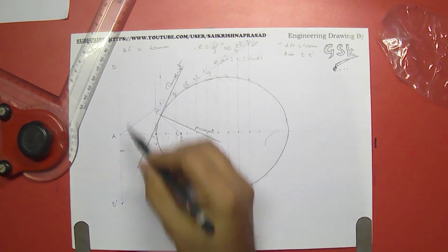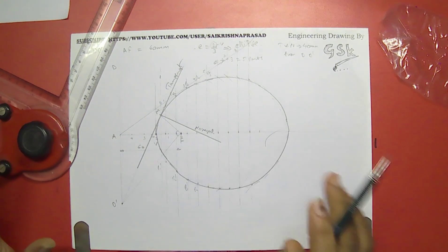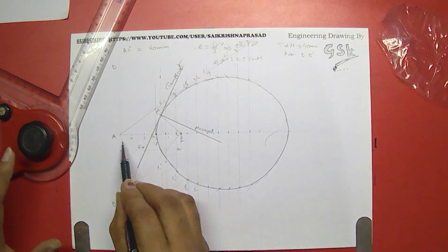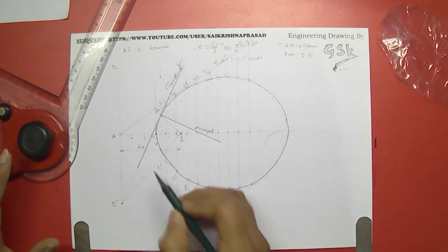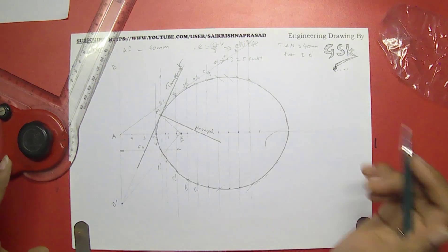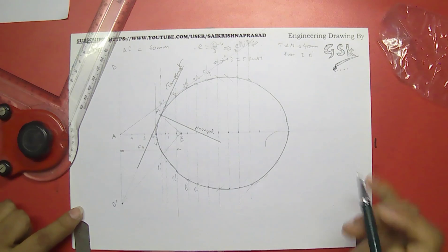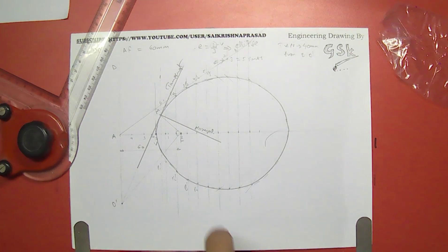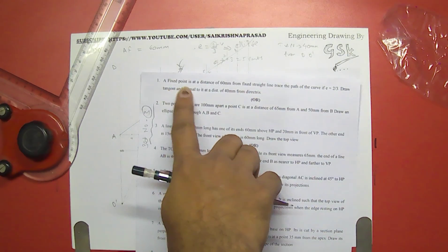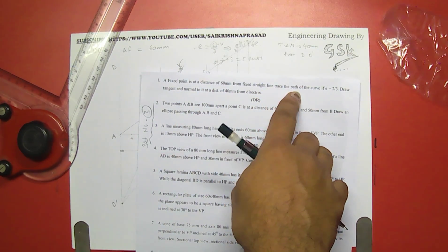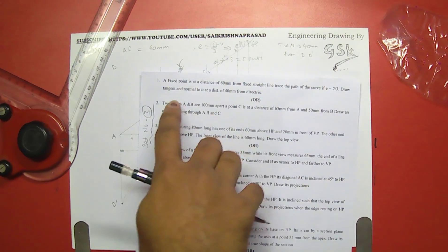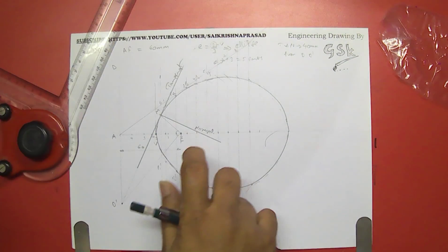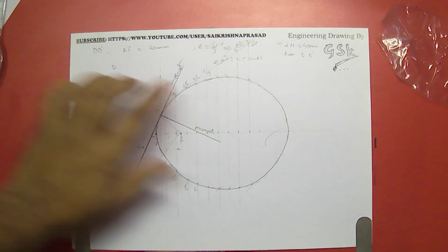Notice that the curve, tangent, and normal are drawn dark, while all reference lines — the directrix, perpendicular lines, arcs, and 90-degree construction lines — are drawn very light and thin. In engineering graphics, you must always show the main drawing dark and all construction lines very light. I hope everyone understands this question: a fixed point at 60 mm from the directrix, eccentricity 2 by 3, tangent and normal at 40 mm — this is the answer.